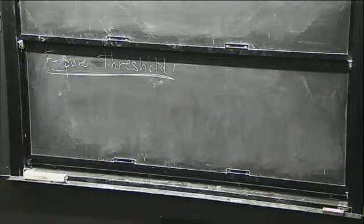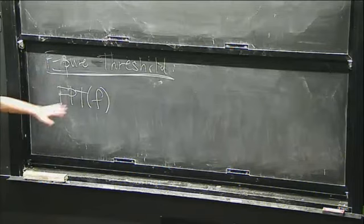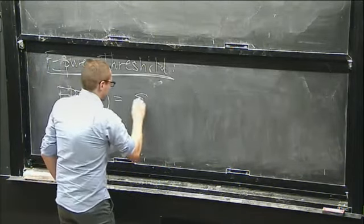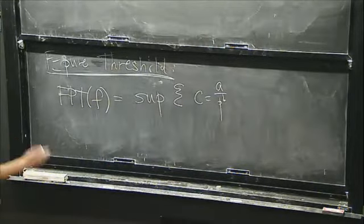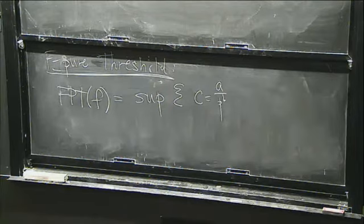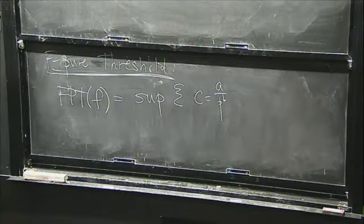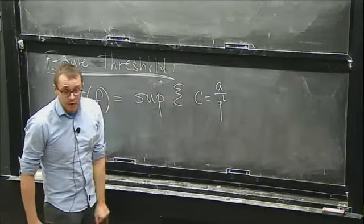The F-pure threshold — denote it by this notation. I could make this definition at any point, but this is just for the origin. Here, when I was working in characteristic zero and I took |f|^{2c}, I could raise it to any real power I liked. But in positive characteristic we've defined these rings R^{1/p^e}, so the denominators of all exponents are just pure powers of p.